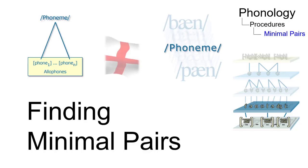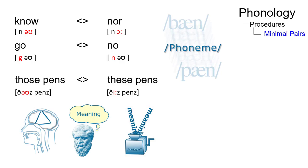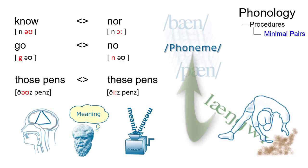In phonology, minimal pairs are pairs of words or phrases in a particular language that differ in only one phonological element and have distinct meanings. Minimal pairs constitute a discovery procedure for the phonemes in a language.